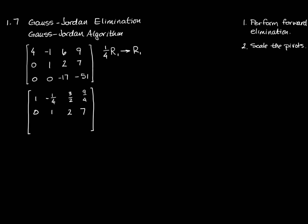For row three, the entry is currently negative 17 — I need that to be a one. So I'll take row three and multiply it by negative one over 17, putting the result into row three. Negative one-seventeenth times zero is zero, negative one-seventeenth times zero is zero, negative one-seventeenth times 17 is positive one, and 17 goes into 51 three times. I've completed step two by scaling all the pivots so they become ones.